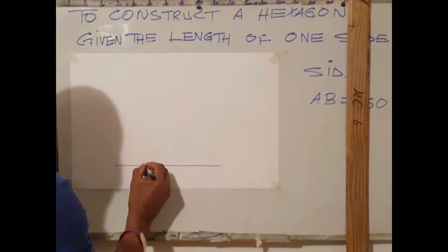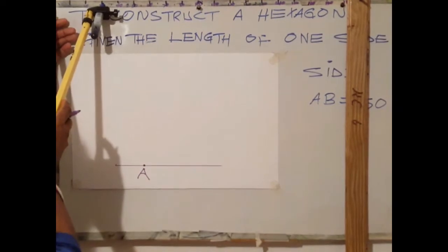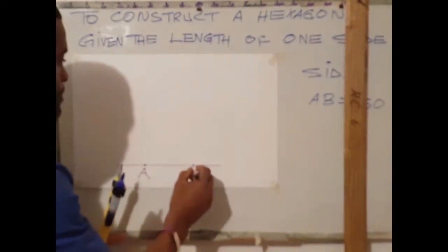Identify starting point A. From A, measure 50 millimeters. Label that point B.